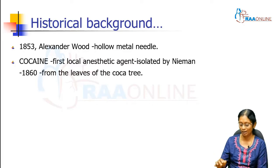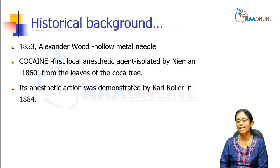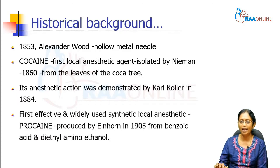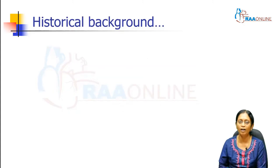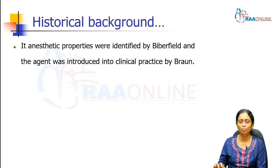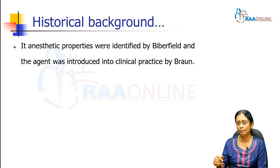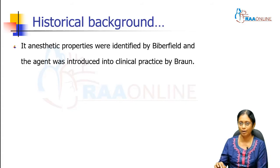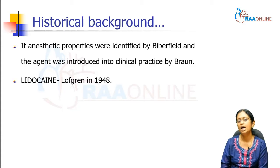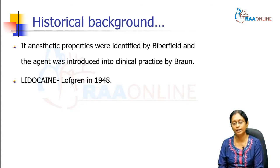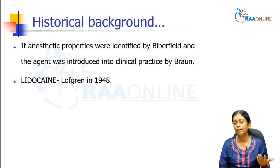So this is how we started. Cocaine was the first local anesthetic agent. Then we went on to a demonstration by Karl Koller. Then procaine was introduced in 1905. The anesthetic properties were first identified by Baberfield and brought into practice by Braun. Lidocaine came in the 20th century, in 1948.